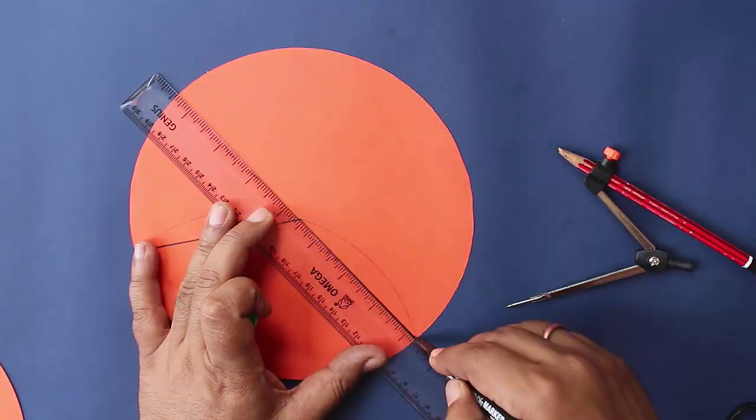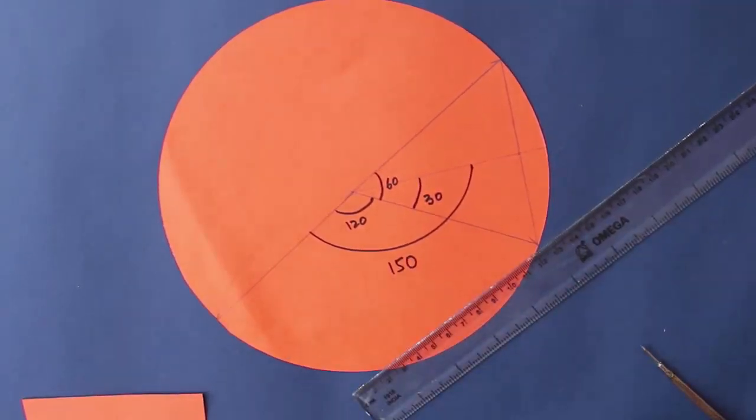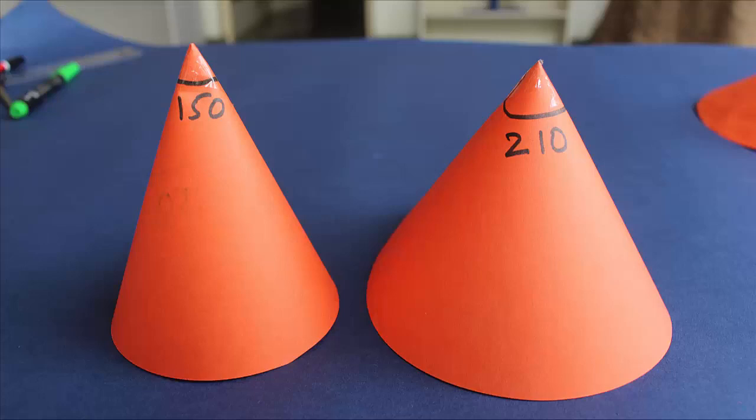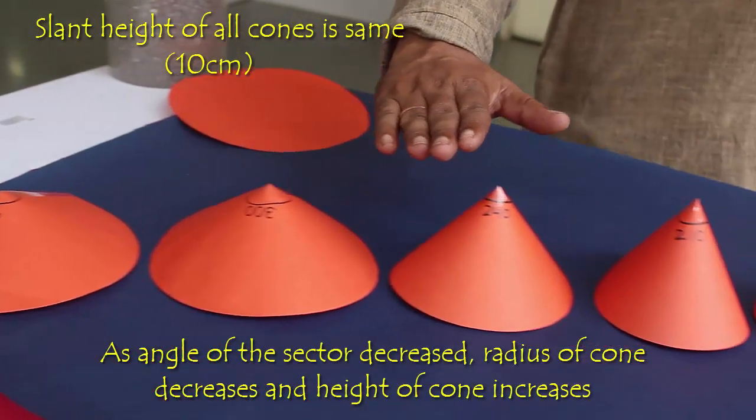And so we can make lots of cones with lots of different angles starting from 30, 60, 90, 180 and so on. And you can see that the angle of the sector decreases. The radius also decreases but the height of the cone increases.